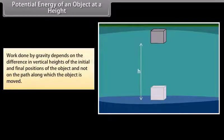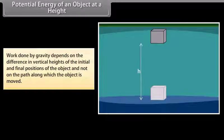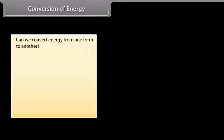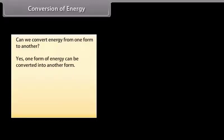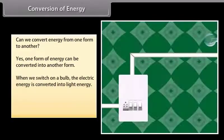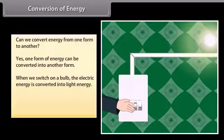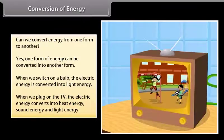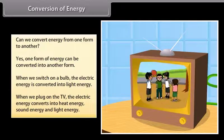The work done by gravity depends on the difference in vertical heights of the initial and final positions, not on the path taken. Energy can be converted from one form to another. For example, when we switch on a bulb, electrical energy is converted into light energy. Similarly, when we turn on a TV, electrical energy converts into heat energy, sound energy, and light energy.